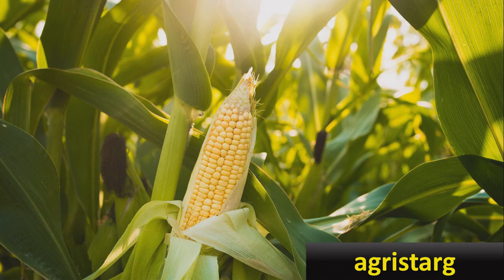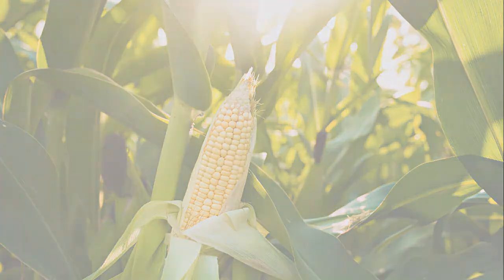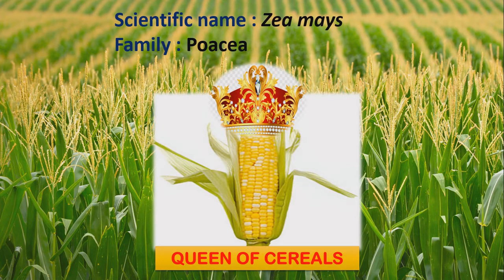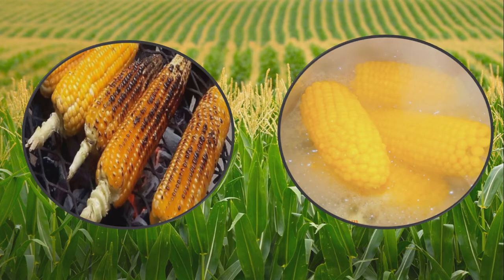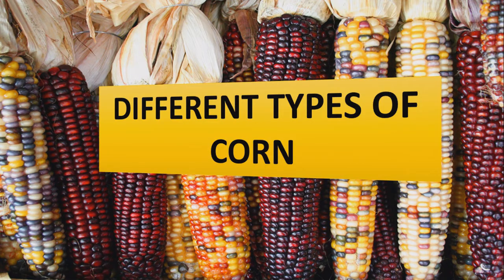Hello guys, this is Agri Star Chi. In this video I am going to discuss the types of maize. Maize or corn, scientific name Zea mays, belongs to the family Poaceae and is also known as the queen of cereals. It is one of the most important three cereals and has the highest genetic yield potential among cereals. It has so many varieties and whether it is roasted, boiled, or popcorn, it tastes amazingly good.